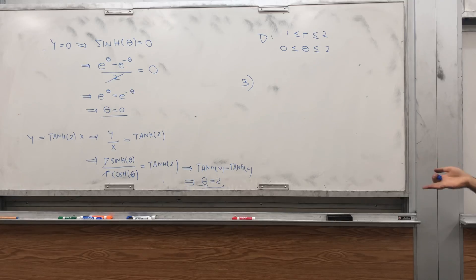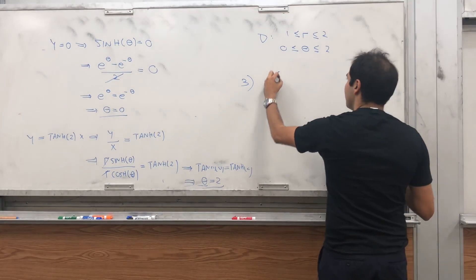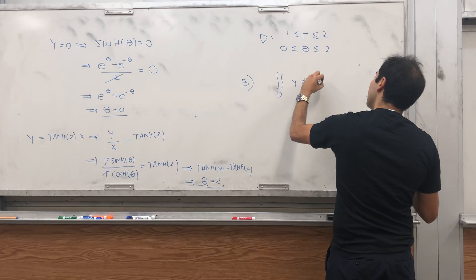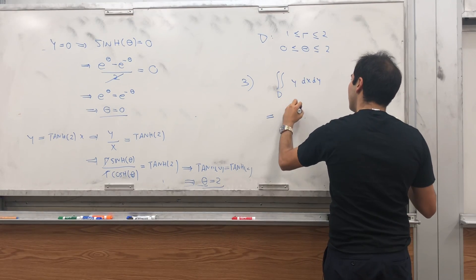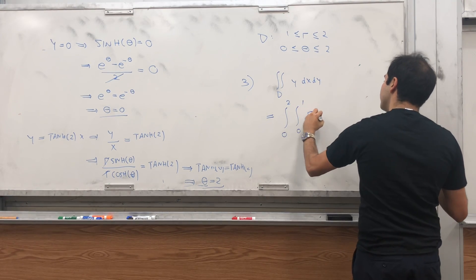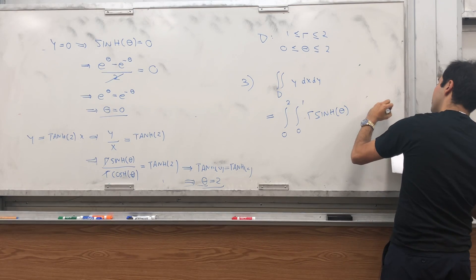Okay. So, in particular, to calculate that integral, it becomes the following. Integral of d of y dx dy will become integral from 0 to 1 and 0 to 2. y is r sinh of theta dr d theta.